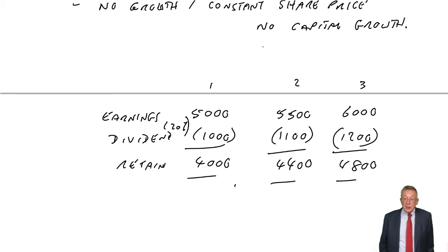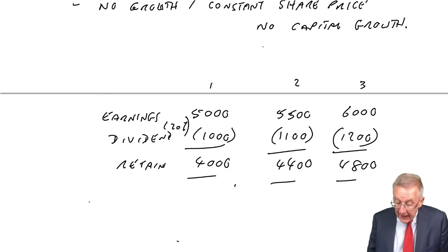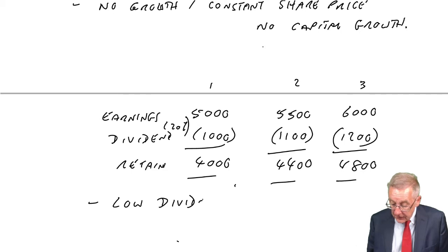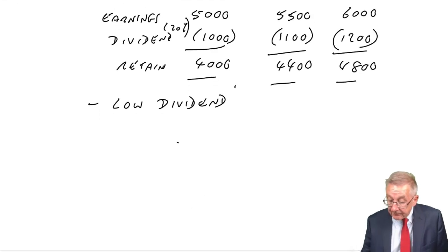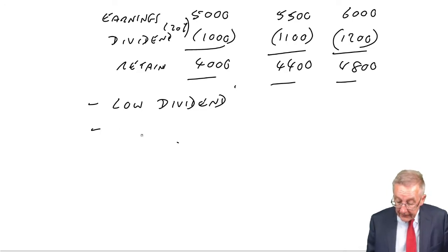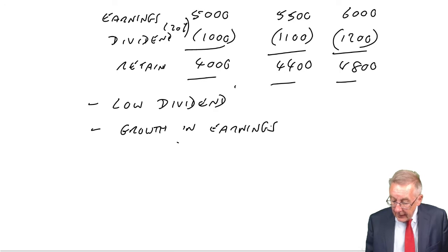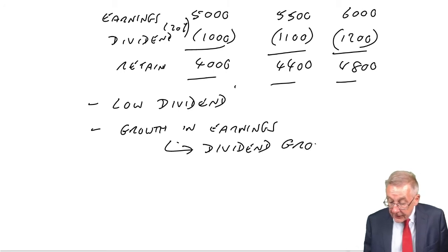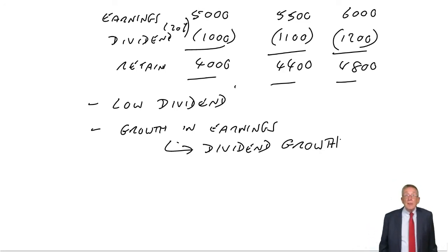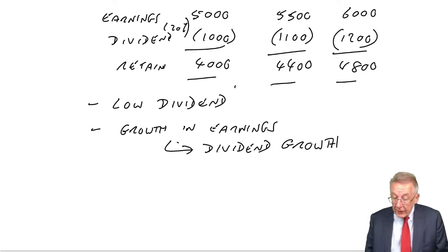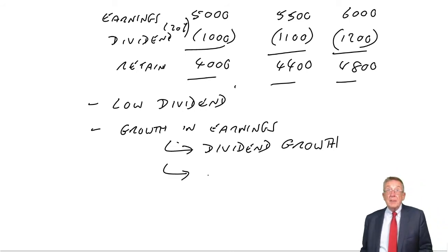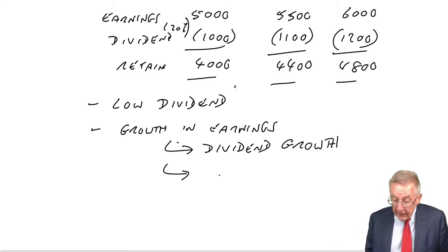You should be clear about the principle: you're getting a lower dividend, but because the company is retaining more, the earnings are growing. The dividend is therefore growing. And at the same time, since the company is earning more, the company will be worth more. The share price will go up as well — as the company becomes bigger and more profitable, there'll be capital growth.